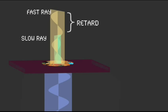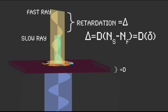The difference between the two rays is called retardation. The amount of retardation is determined by the mineral birefringence and the thickness of the thin section.